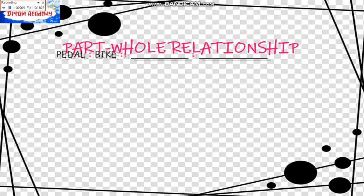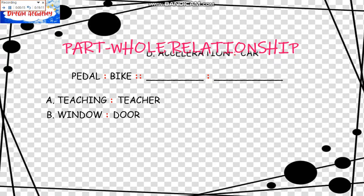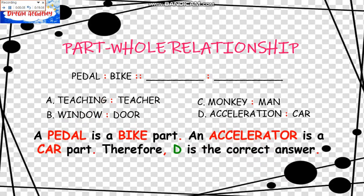We have the next type of relationship: the Part-Whole relationship. Pedal is to Bike as blank is to blank. The choices are: Teaching is to Teacher; Window is to Door; Acceleration is to Car; and Monkey is to Man. It should be Accelerator — an Accelerator is a car part, and a Pedal is a bicycle part. Therefore, D is the correct answer: Accelerator.